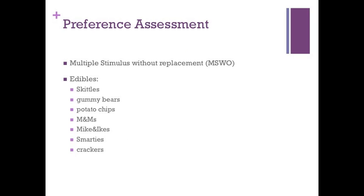For the study, a multiple stimulus without replacement preference assessment was conducted. Seven edible items were assessed: Skittles, gummy bears, potato chips, M&Ms, Mike and Ikes, Smarties, and crackers. A selection was defined as putting an item inside the mouth. Prior to the beginning of each session, the children were given the opportunity to sample each of the items.